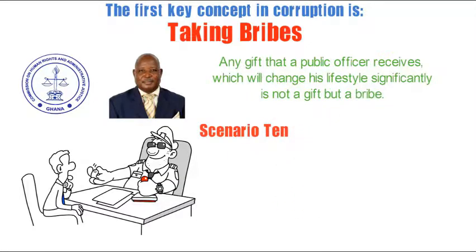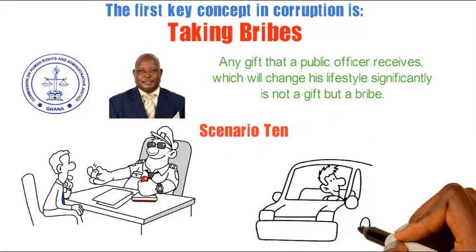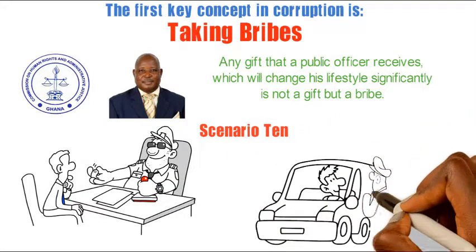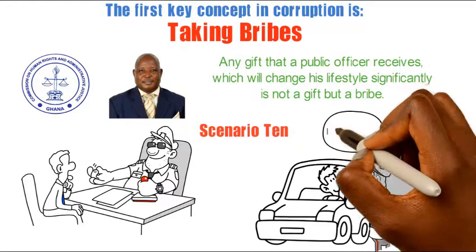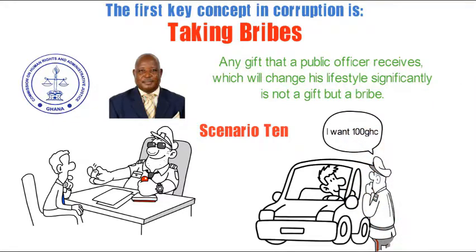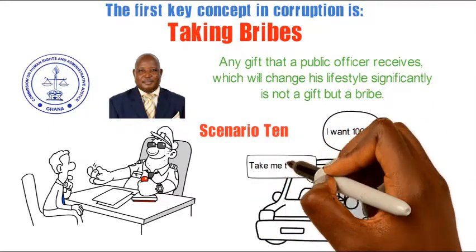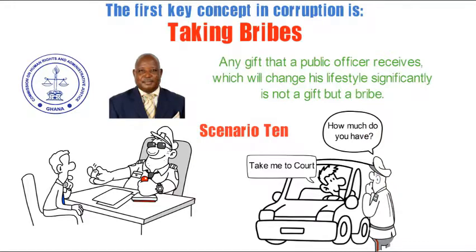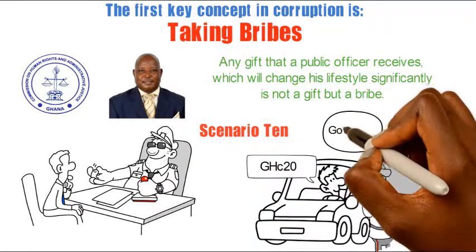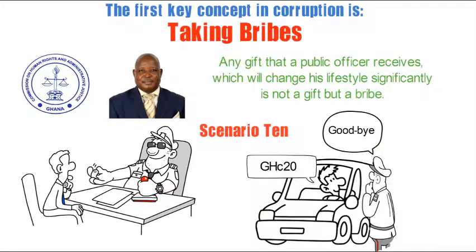An example can be seen in Scenario 10, where Selassie is stopped by the police for a traffic violation. The official fine is 100 Ghana cedis. Selassie does not have the money and asks the policeman to process him for court. The policeman asks how much he has. Selassie says 20 Ghana cedis. The policeman takes it and says goodbye. This is a typical case where the policeman is guilty of taking a bribe.